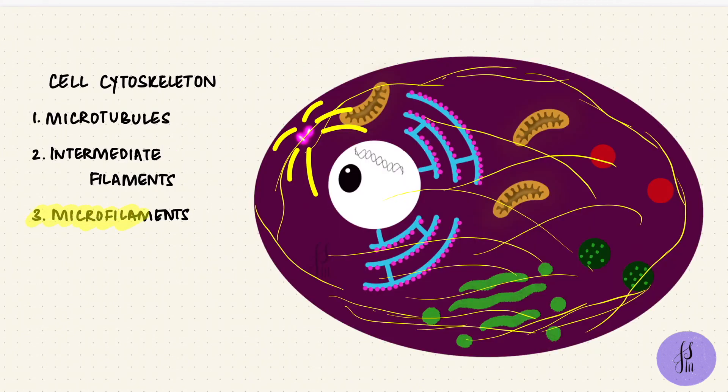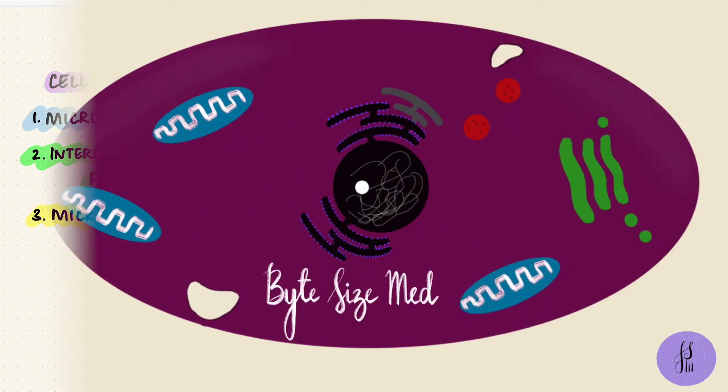But that was all about microfilaments and intermediate filaments, and together with microtubules, they all form the cell cytoskeleton. I hope this video was useful. If it helped you, give it a thumbs up and subscribe to my channel. Thanks for watching and I'll see you in the next one.